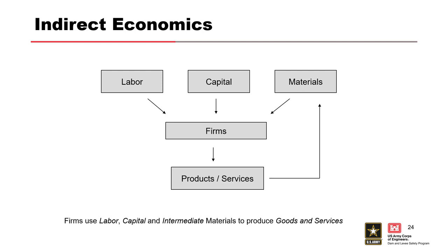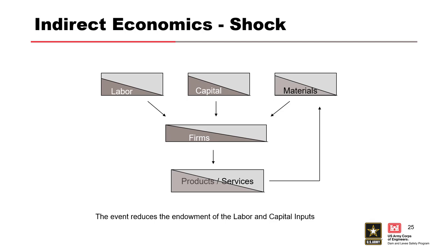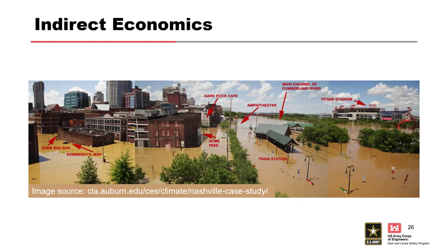The difficulty with indirect economics is knowing where to draw the line. If flooding hits one neighborhood, does it affect neighboring counties? Do effects in those counties ripple further? Similar to indirect life loss, it's hard to define the boundary. Sometimes impacts are local; sometimes they're national scale, warranting much more consideration.